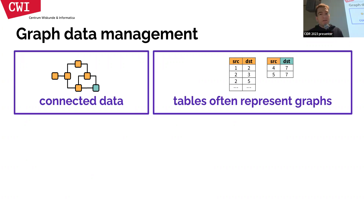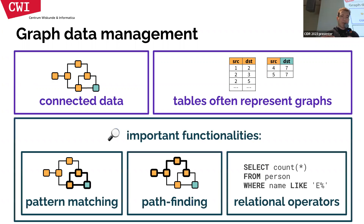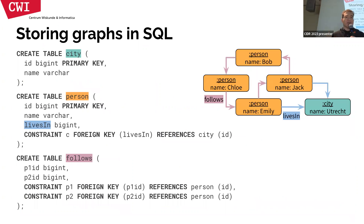What is graph data management? It involves working with connected data, typically many-to-many relationships, and tables. People think graphs are only for social networks or telecom networks, but graphs are everywhere. You often just have tables that connect to each other via joins — and this also forms graphs. When you want to query or analyze these graphs, the important functionalities, based on interesting surveys, are pattern matching, pathfinding, and all relational operators.